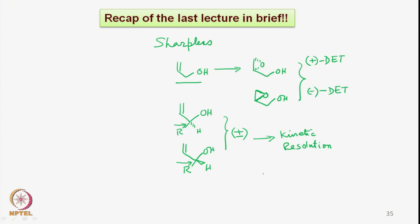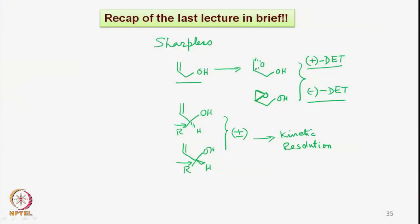Up to here we had seen the mechanistic aspects of these reactions—how the dimeric species of the titanium catalyst allows the orientation of the epoxide to come from the lower side in the case of plus-DET and from the top side or the beta side when we use minus-DET. Having obtained such epoxy alcohols in very high enantiomeric purity in a catalytic fashion, we also saw the utility of molecular sieves to remove water and isopropanol from the reaction medium to make the reaction catalytic.